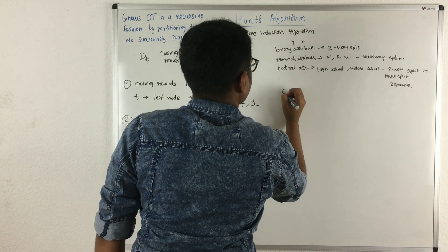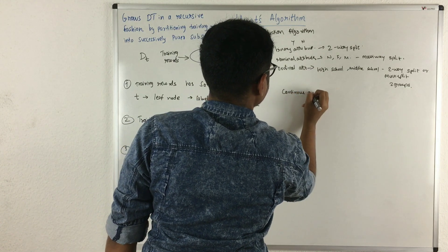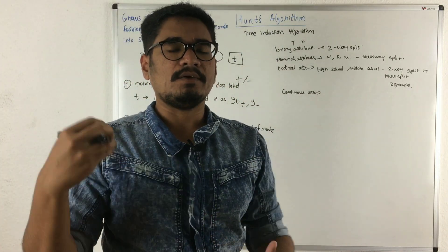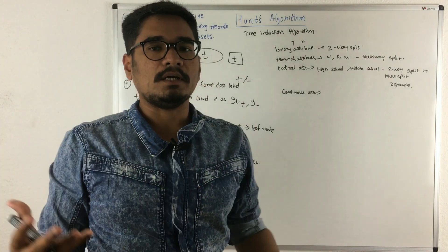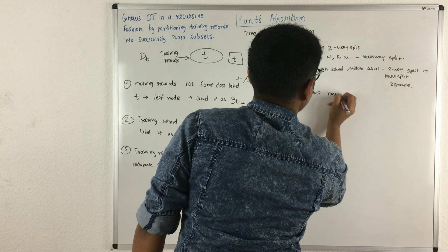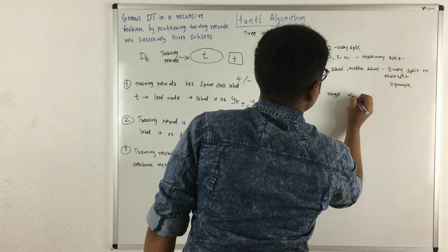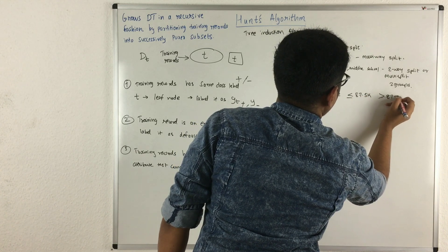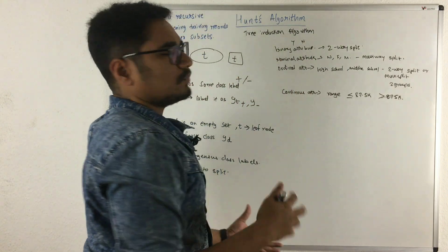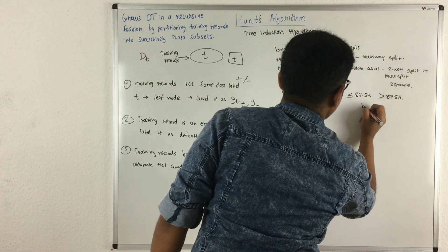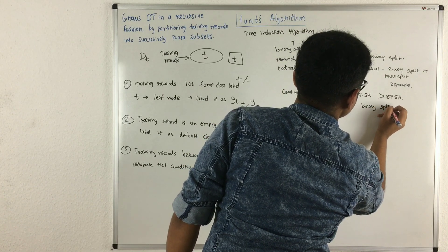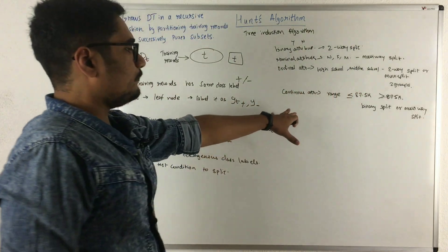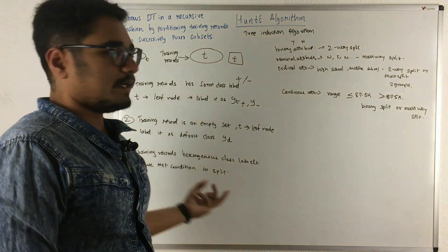Then you have continuous attributes. For example, in an employee dataset, different employees in different designations have a salary — their annual income — which is a continuous attribute. For continuous attributes, you convert the values into a range. For example, you might split employees with salaries less than or equal to 87.5K versus greater than 87.5K. You then construct either a binary split or a multi-way split.